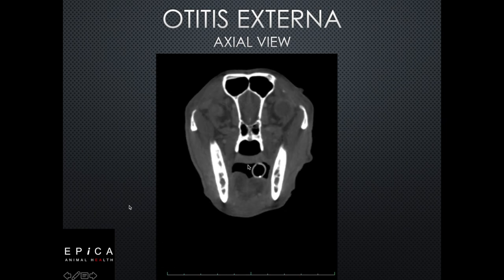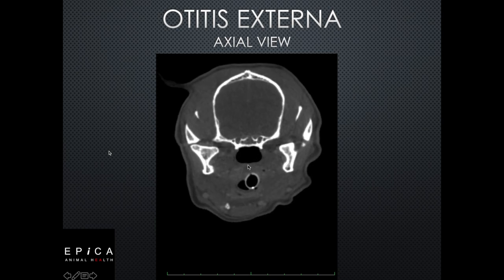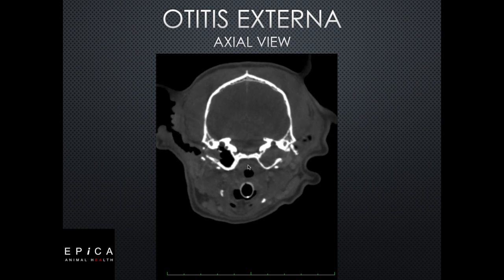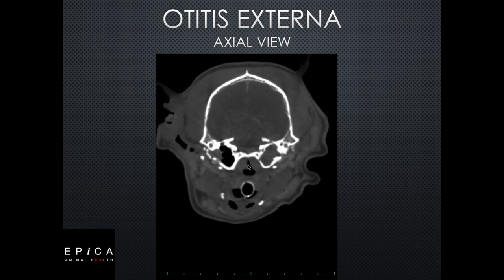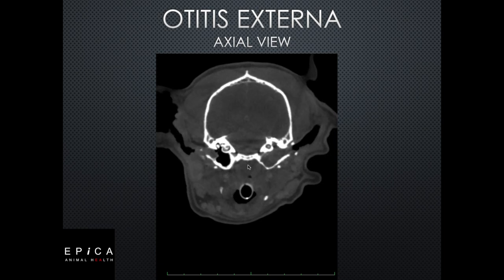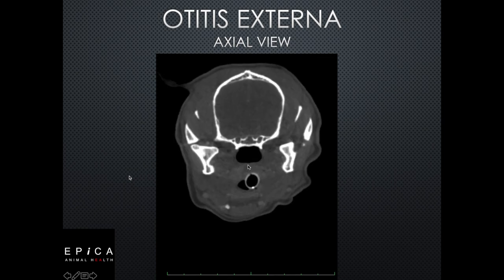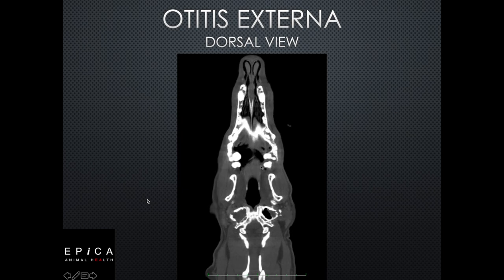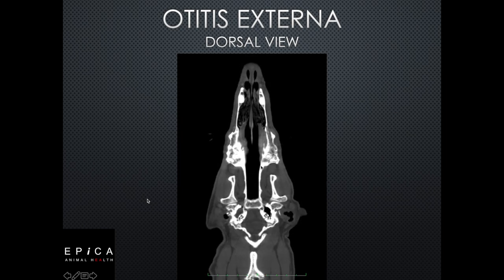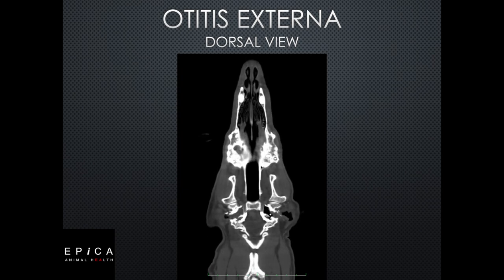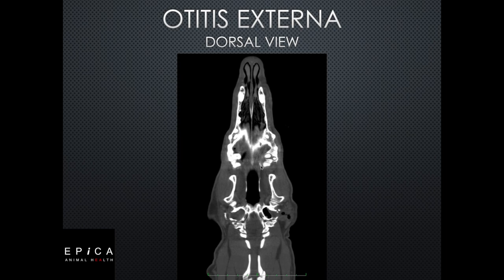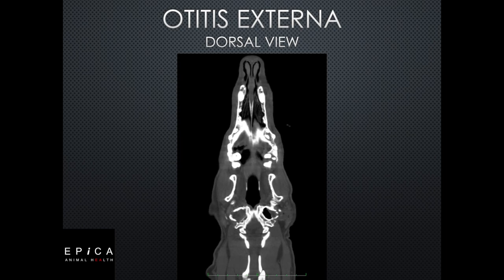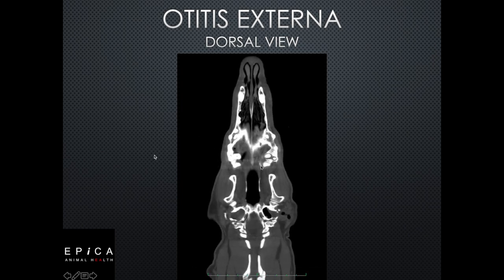Otitis externa is very common — most general practitioners see quite a few OE cases. This is a great way to give the pet owner a really good view of what's going on inside the animal's ears. This axial view is what we could typically get with a conventional CT, but when we go to the dorsal view of the same patient, conventional CT can't do this — we can't get this kind of detail. This is scanned at 150 microns, giving very detailed resolution.